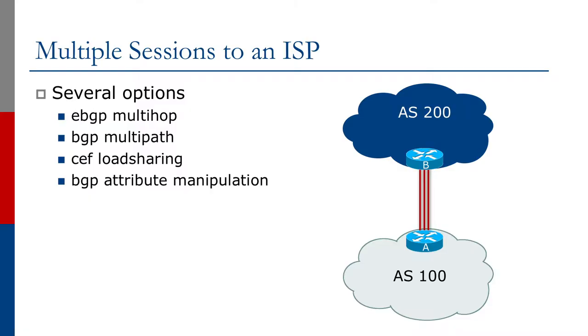We will now look at multiple sessions to an ISP in a little more detail. This is a case where an end user may have multiple links from their router to their neighboring autonomous system or upstream provider. There are several options available and we are going to look at eBGP MultiHop and BGP Multipath as two of the possibilities.